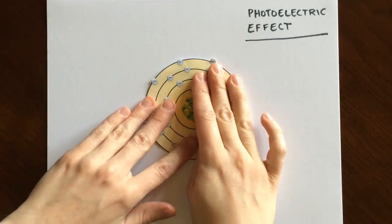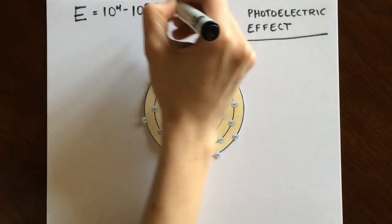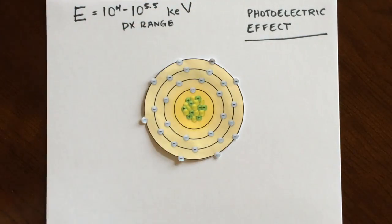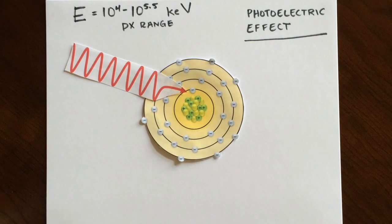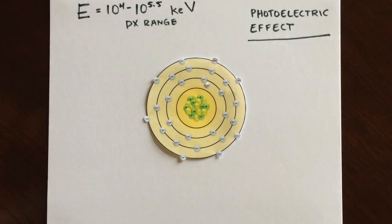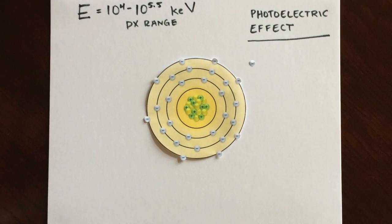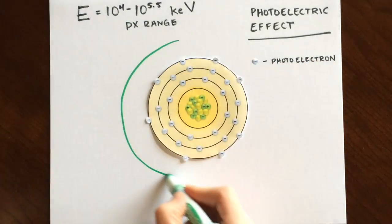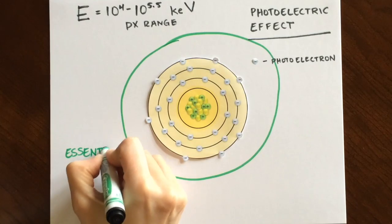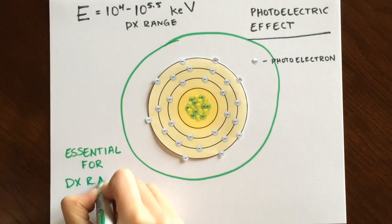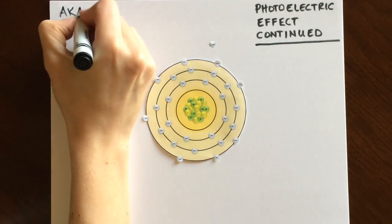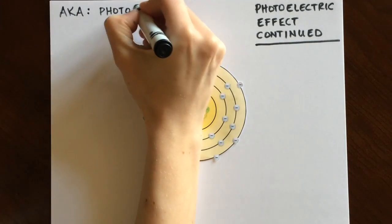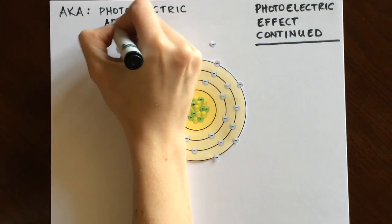In the photoelectric effect, which also occurs in the diagnostic energy range, an x-ray photon interacts with an inner shell electron and completely disappears, causing the electron to be ionized. This electron is now called the photoelectron. This interaction is essential for diagnostic radiology, and we will discuss why later in the video. These interactions may also be referred to as photoelectric absorption since the photon is completely absorbed.